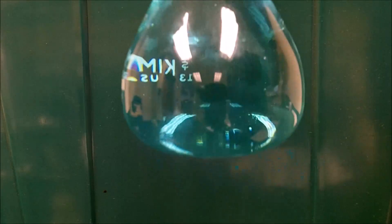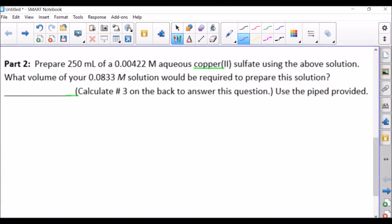Now, what we're going to do is dilute this down. So let's take a look at the calculations for that. For our second calculation, we need to find out what volume of the 100 milliliters that we just prepared, what volume of the 0.0833 molar solution would be required to prepare a 250 milliliter solution of a 0.00422 molar solution. Keep in mind, this is our dilute solution.